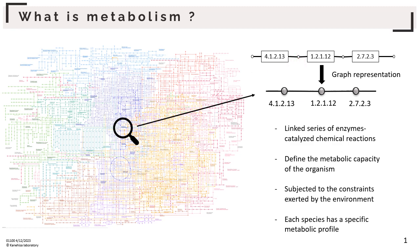The metabolic network defines the metabolic capacity of the organism — that is, the capacity to use substrates present in the medium and to synthesize metabolites. This metabolic network is therefore subjected to the constraints exerted by the environment. Consequently, each species has a specific metabolic profile in relation to the species with its environment.